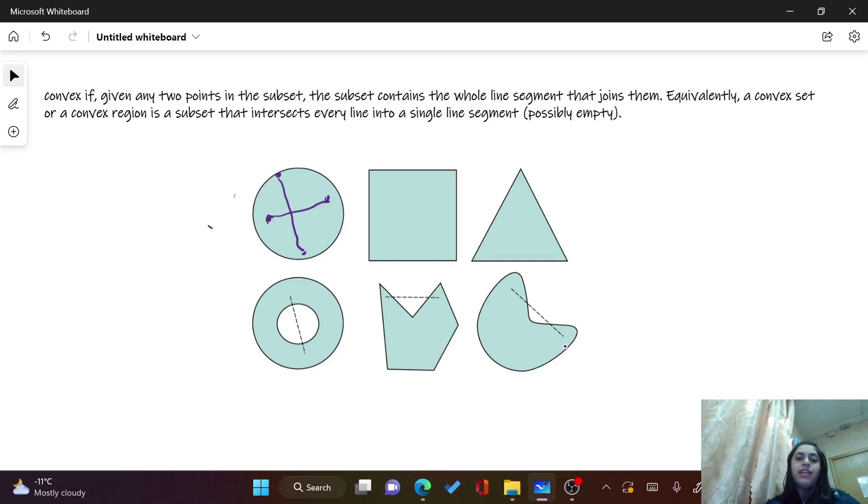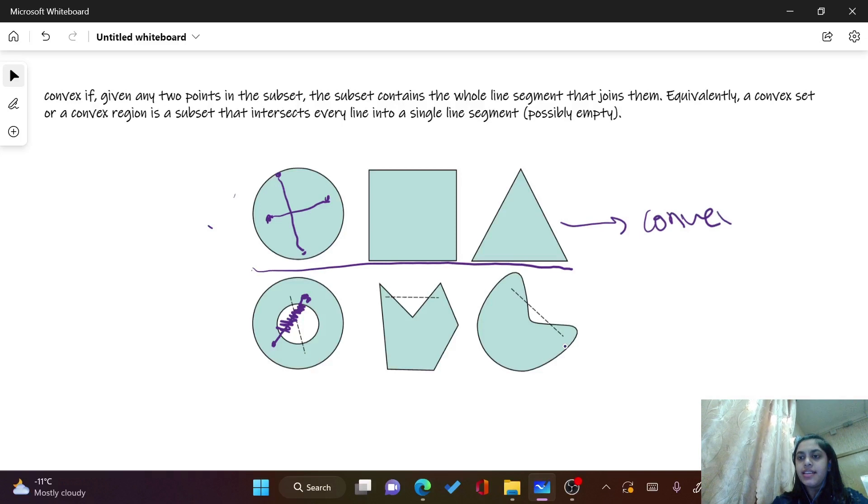But in the example below that, if you take this point and this point, and if you draw the line, this region is outside the graph. It is not contained. Therefore, it is not convex. So the above three examples are of convex sets and these are not convex.